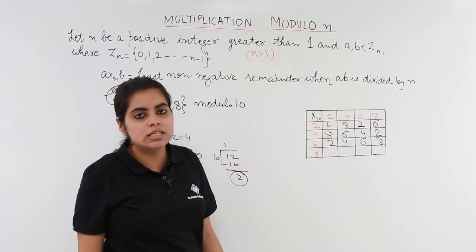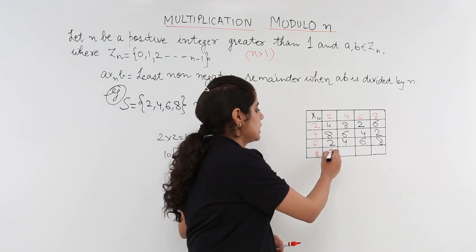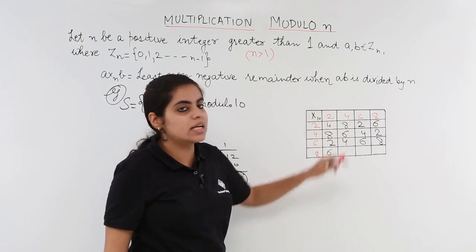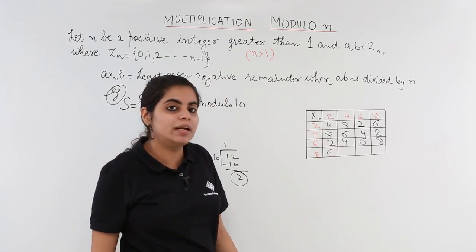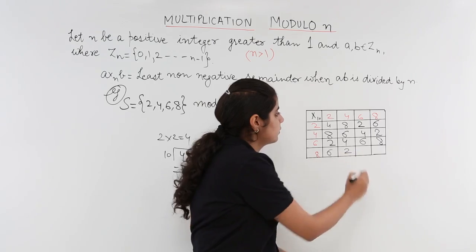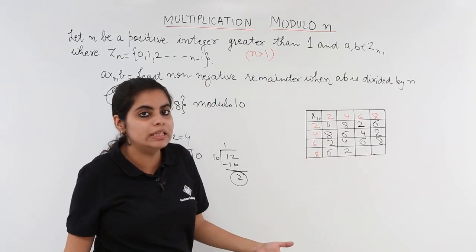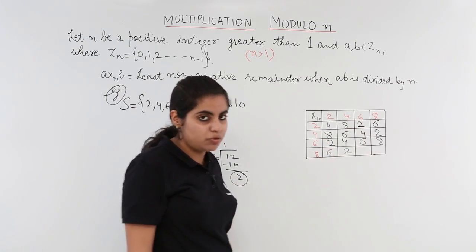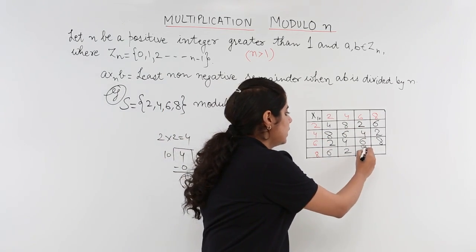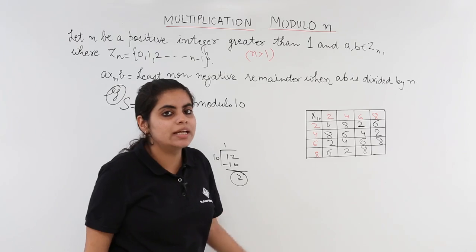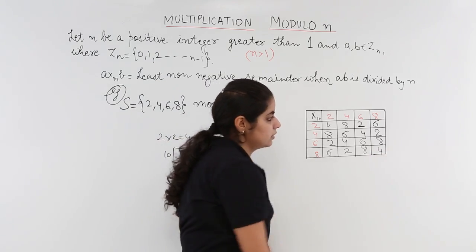8 x 2 is 16. 16 divided by 10 will give me 6 as the remainder. 8 x 4 is 32, 2 is the remainder. 8 x 6 is 48. 48 does not go completely on the table of 10 but yes 40 goes. So 8 is the remainder. Last but not the least 8 x 8 is 64 and we have 4 as the remainder.